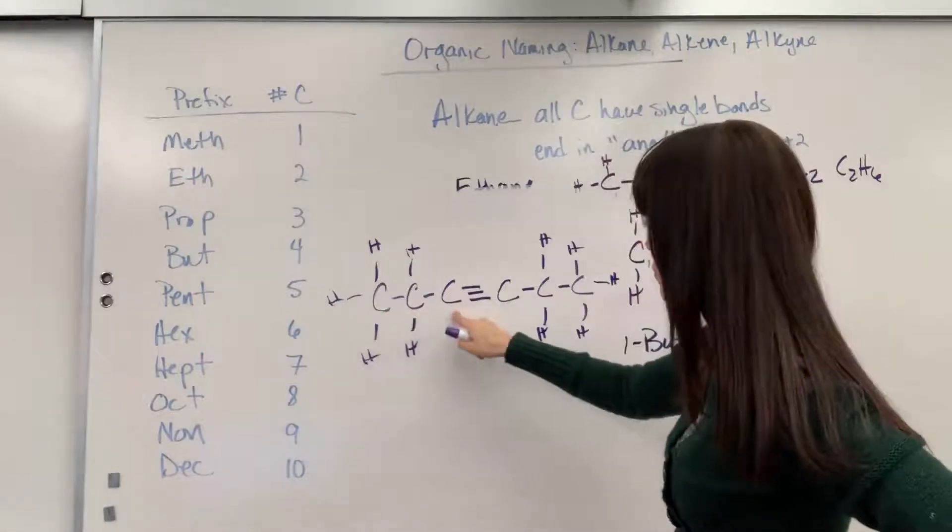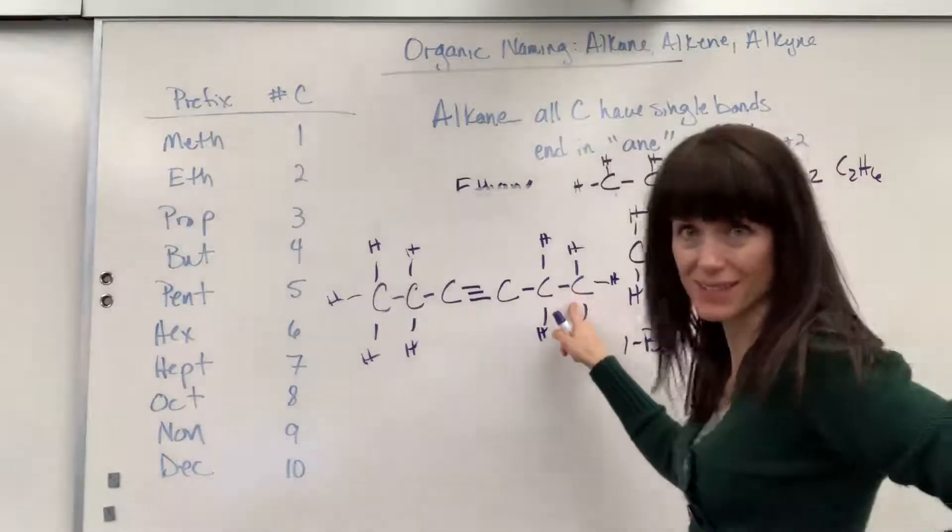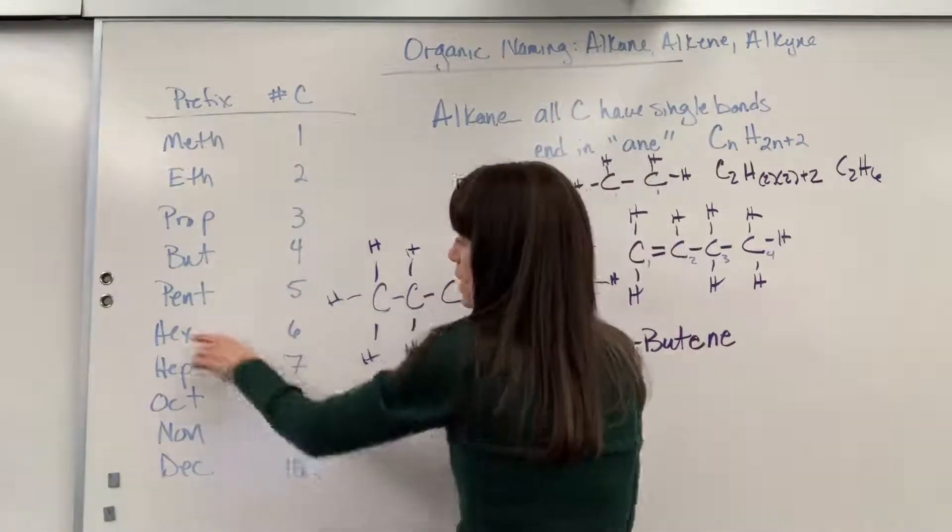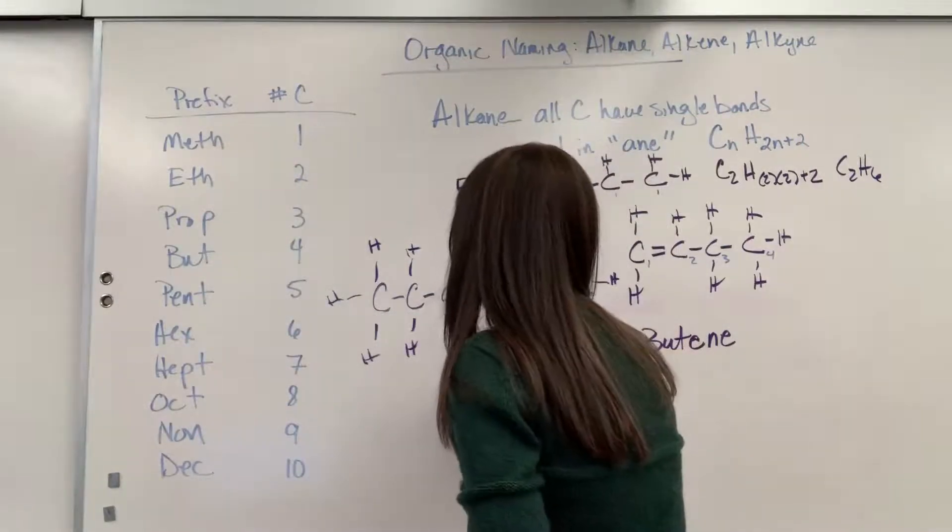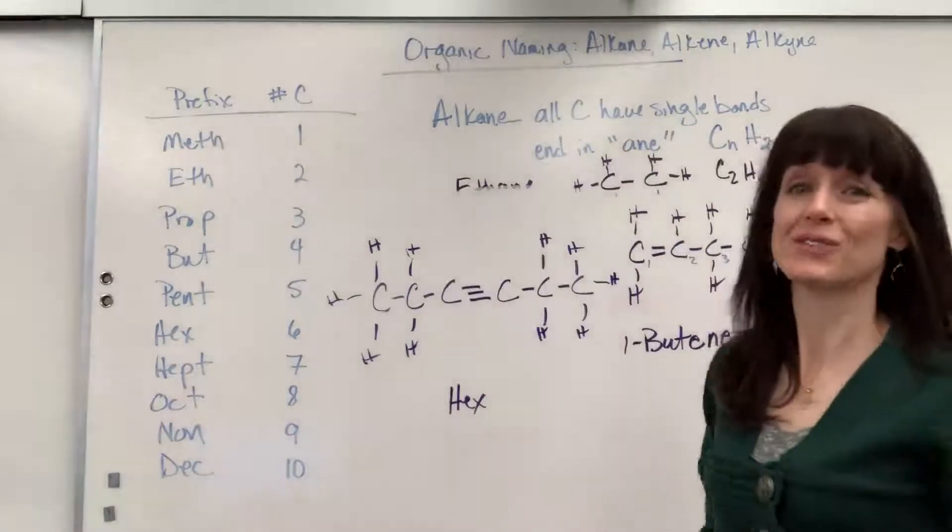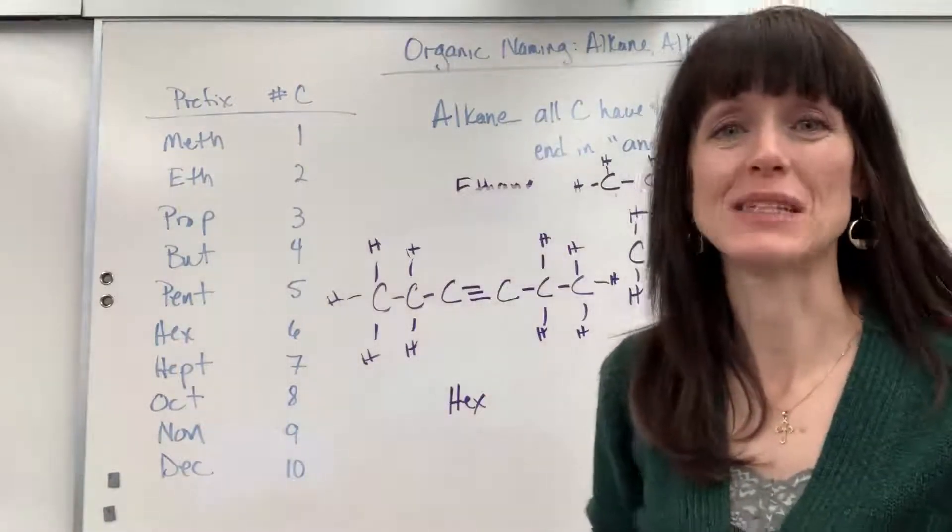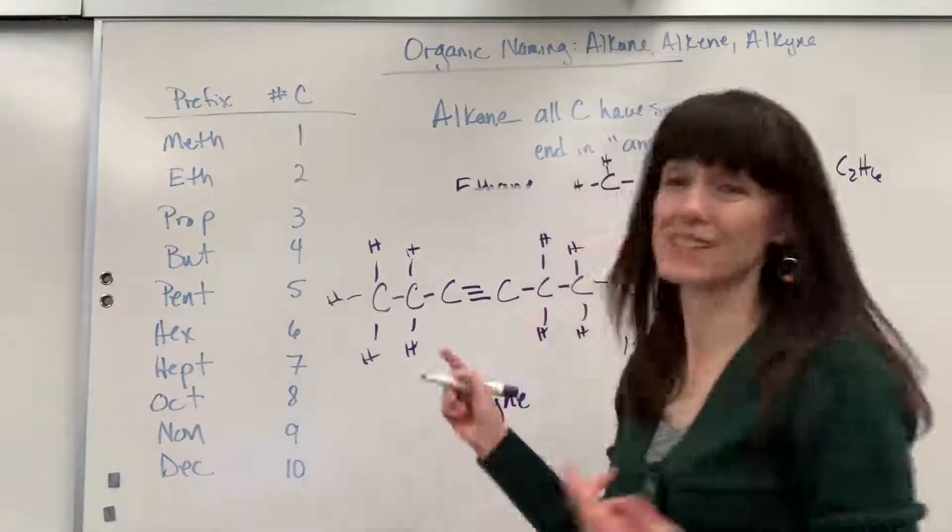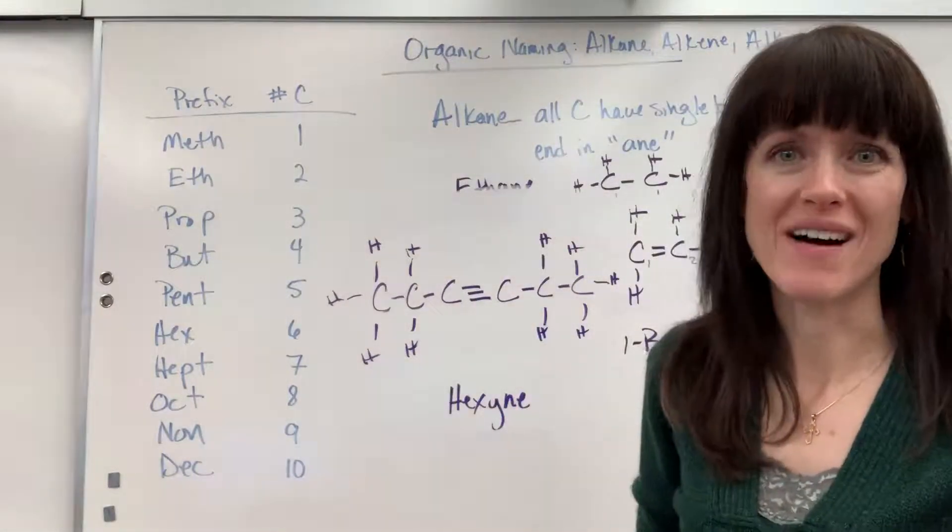First thing that we're going to do is count the number of carbons. So we've got one, two, three, four, five, six. Six carbons. So six carbons, the prefix is hex. Now I notice that triple bond. So I know that the ending is going to be Y-N-E. This is going to be a hexyne. But we've got to tell the reader where is that triple bond. So again, two options of how we can number this.